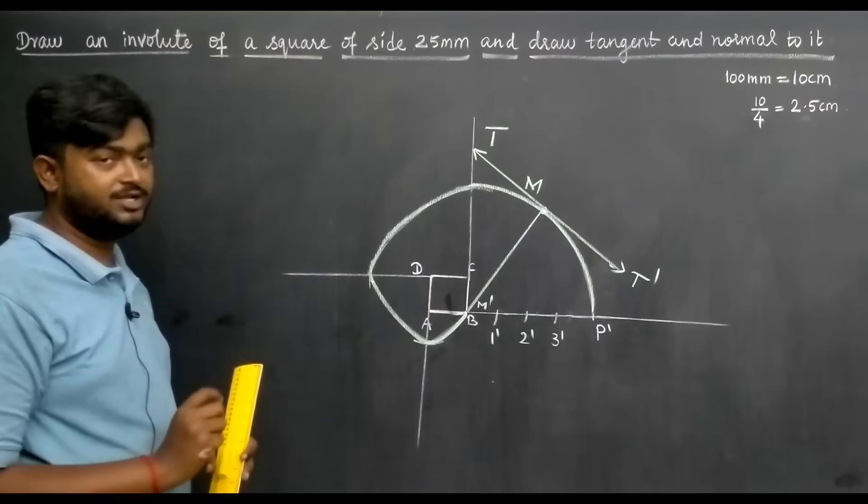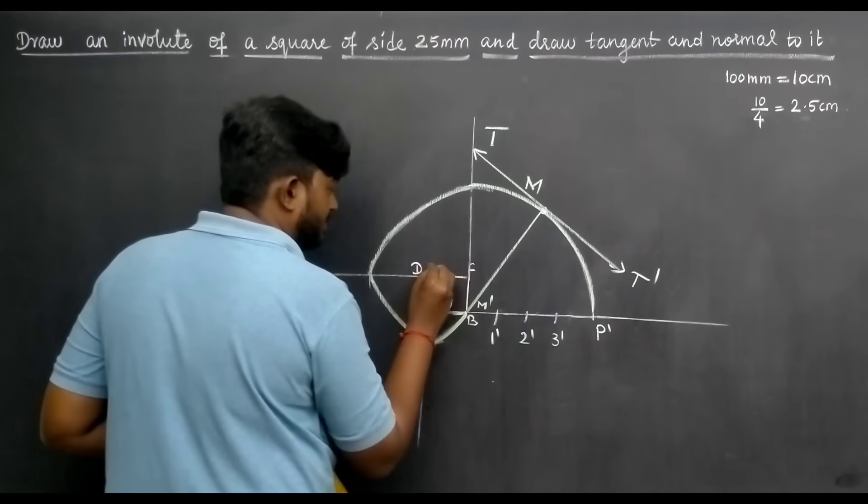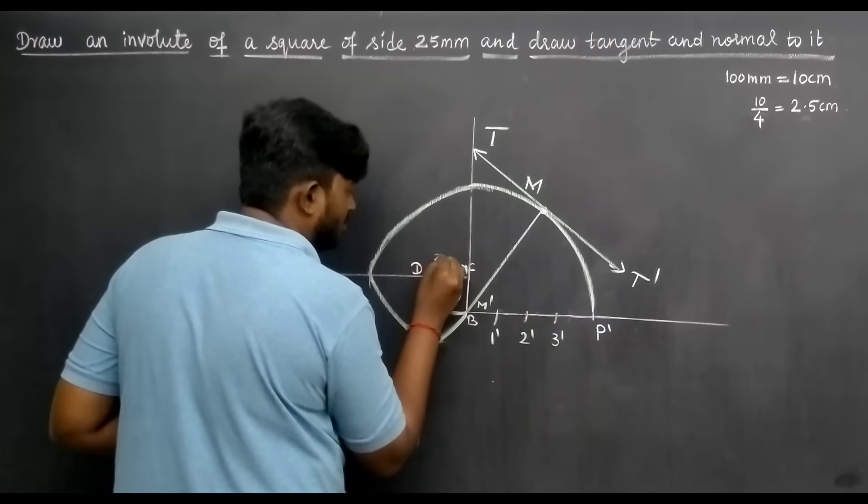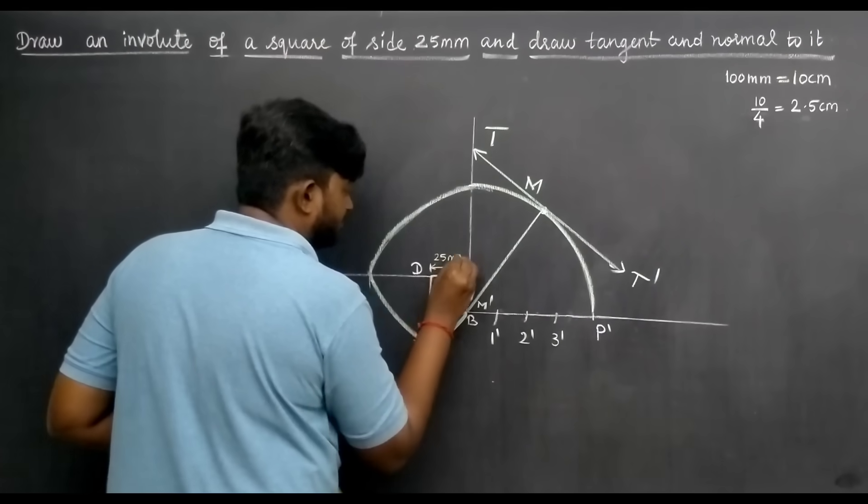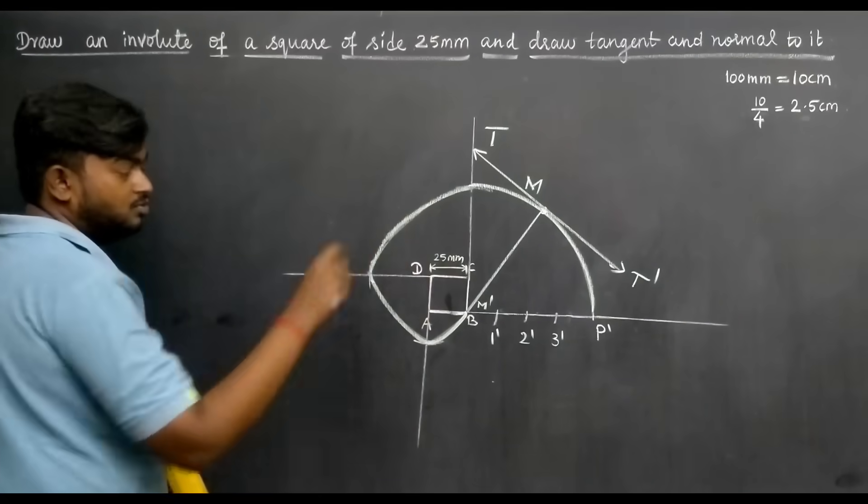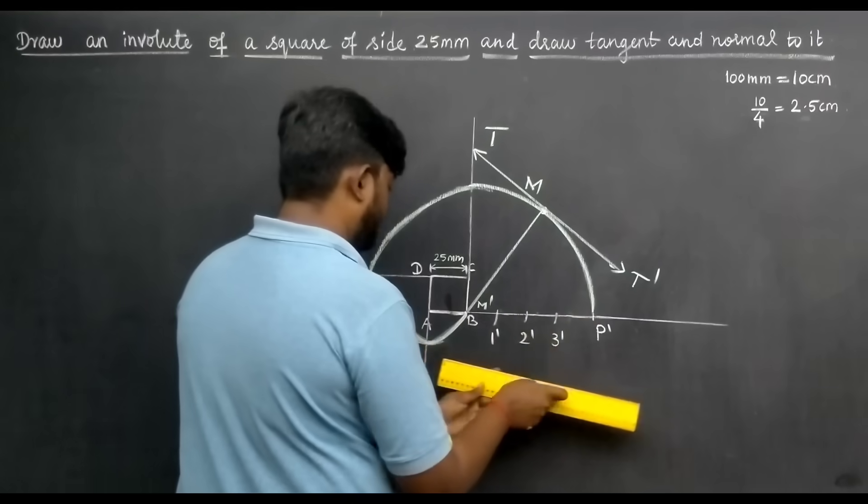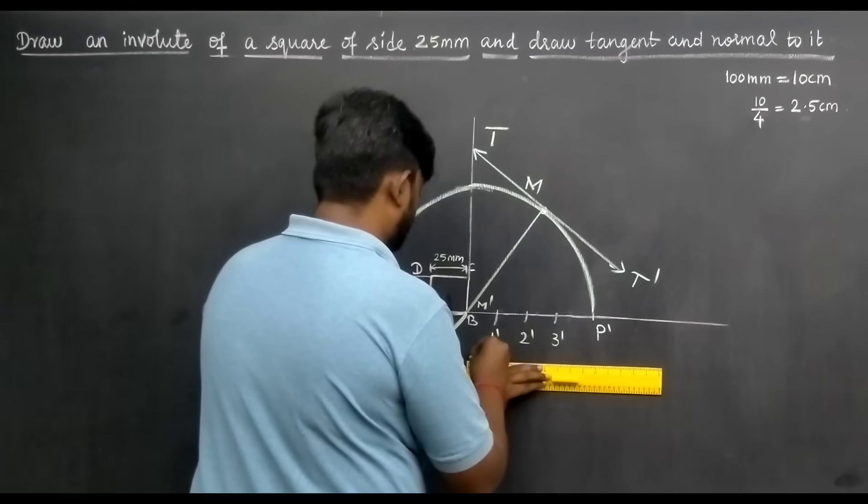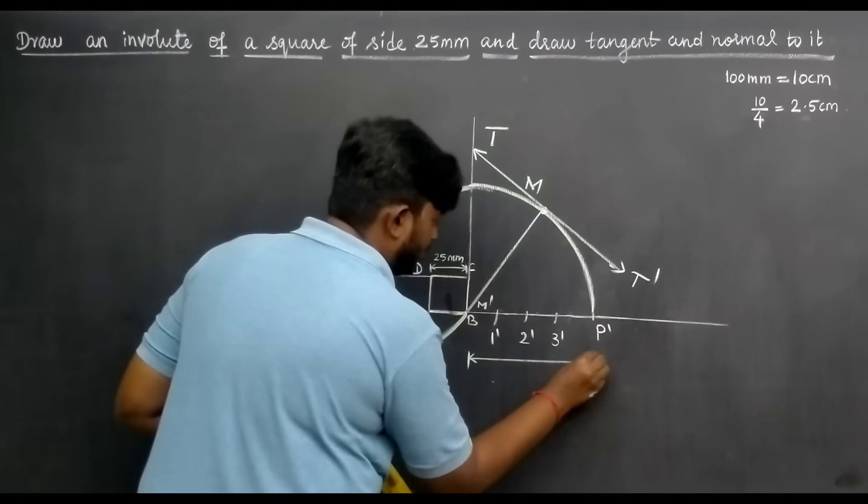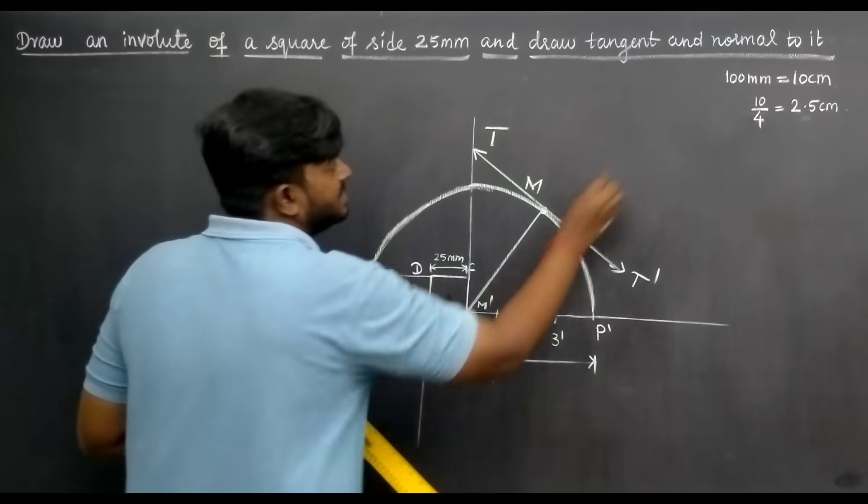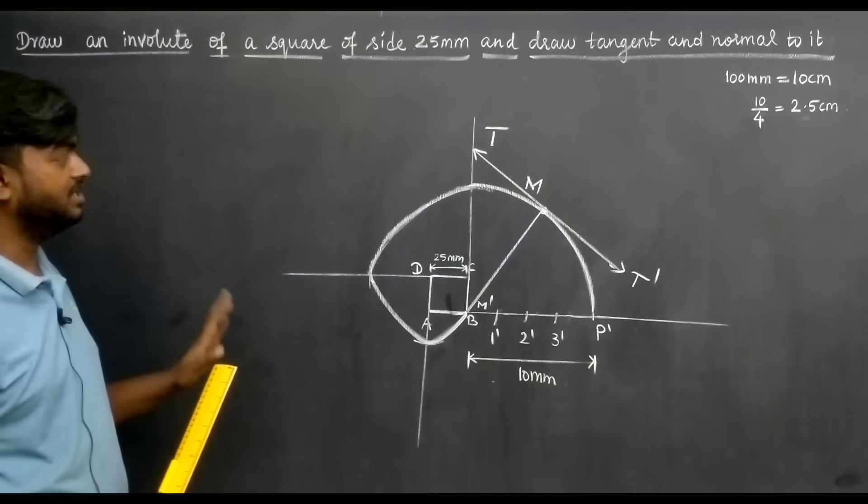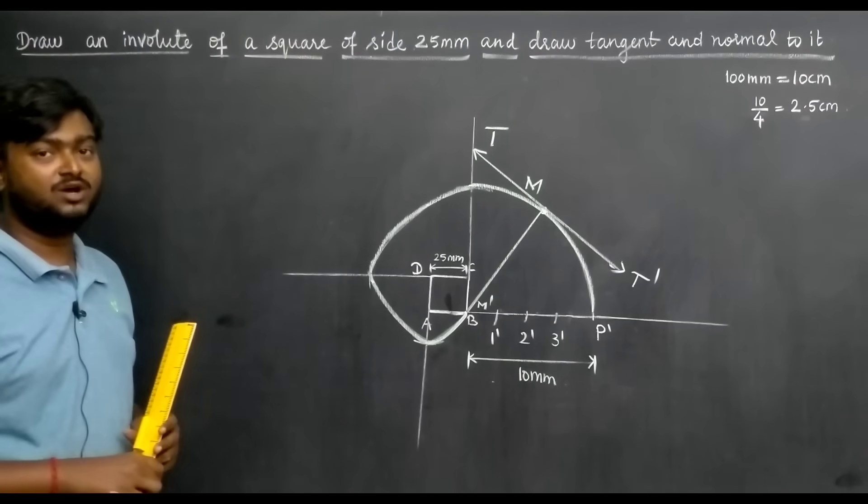Now we can see the square length. Take the scale and measure the square dimensions. This is the measurement. So this is the involute of square, complete with tangent and normal.